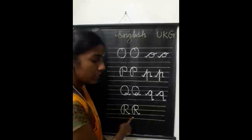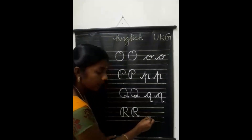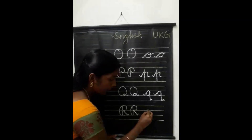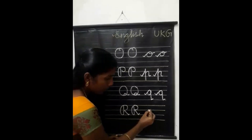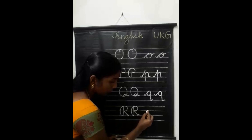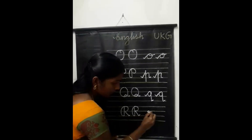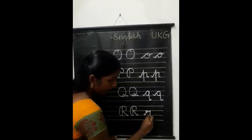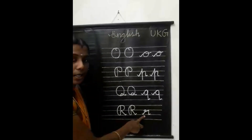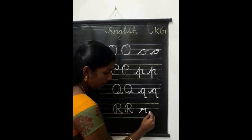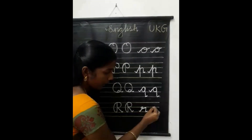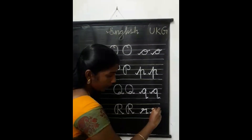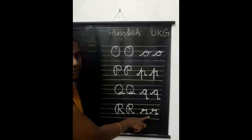Small letter R. Between the second and third line only you should write. Start from here — right slant line. From here write one small right curve, then a sleeping line touching the second line, then from here write one standing line and stroke. Small letter R.